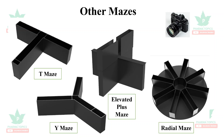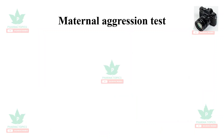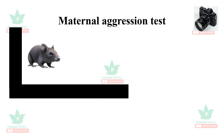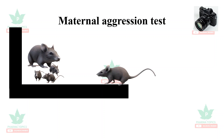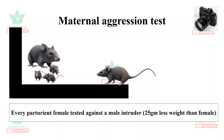The next is the maternal aggression test. When an intruder enters, this induces maternal aggression or anxiety in the female rat. Every post-parturient female is tested against a male intruder, and the male intruder's weight should be less than that of the female — usually 25 grams less.